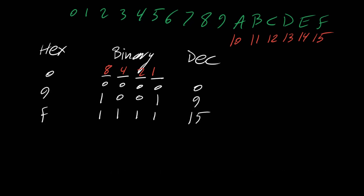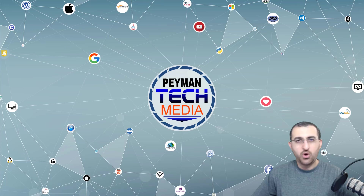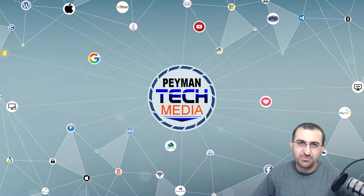For example, the hexadecimal number 1A7 might be written as 0x1A7, where the '0x' prefix indicates a hexadecimal number. Alternatively it may appear as 1A7 with a subscript 16, indicating it is a base-16 number. In the next videos I will talk about how to convert from hexadecimal to other number systems. This was a quick overview of the hexadecimal number system — thank you so much for watching, have a good day.